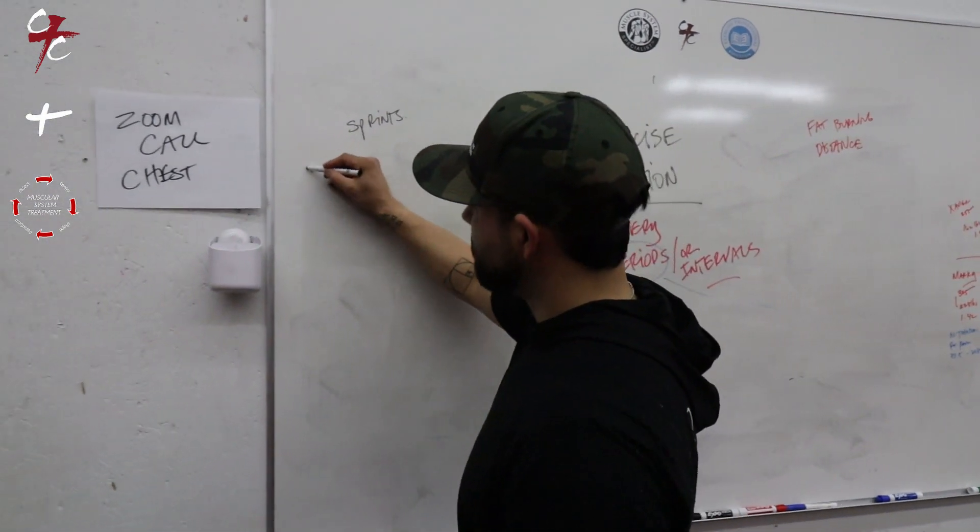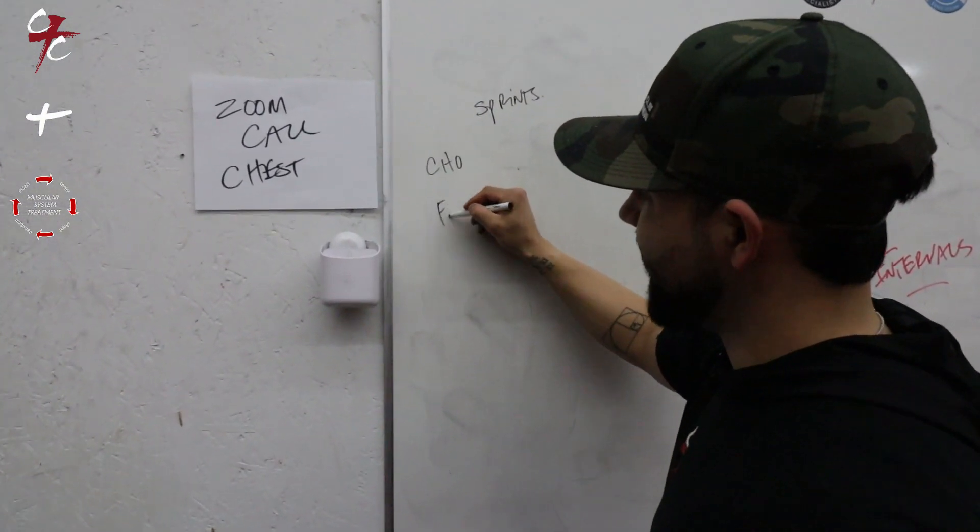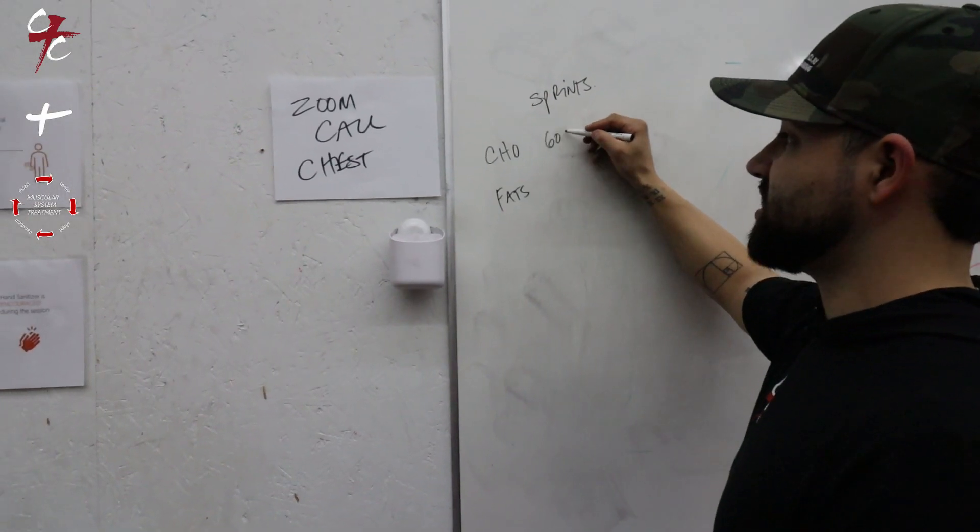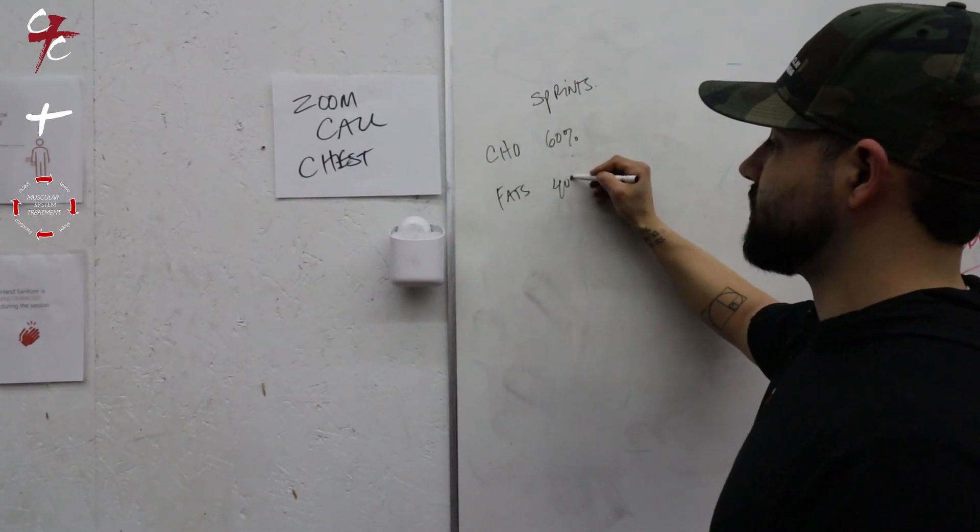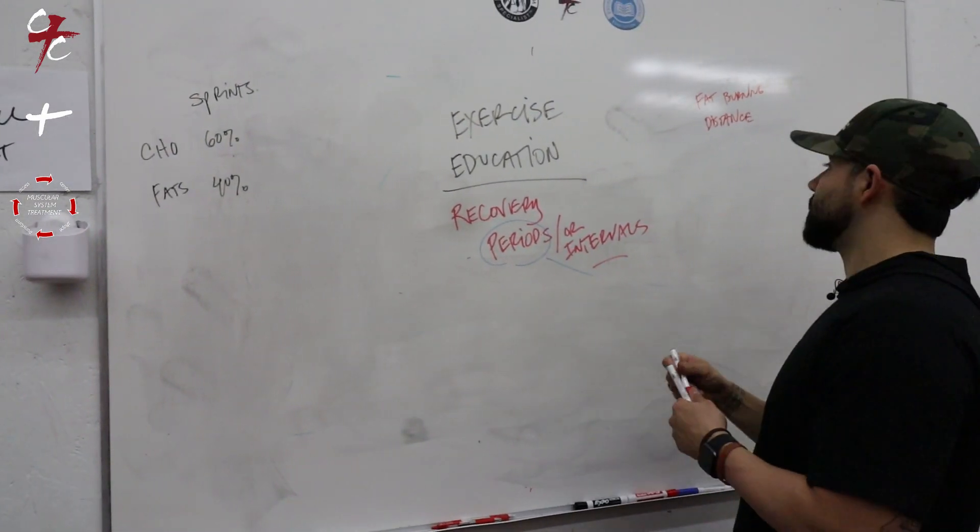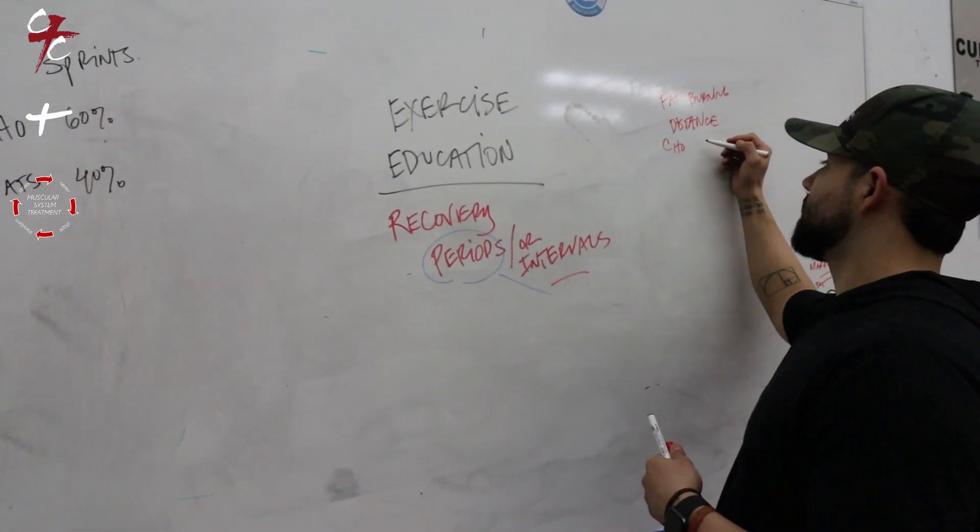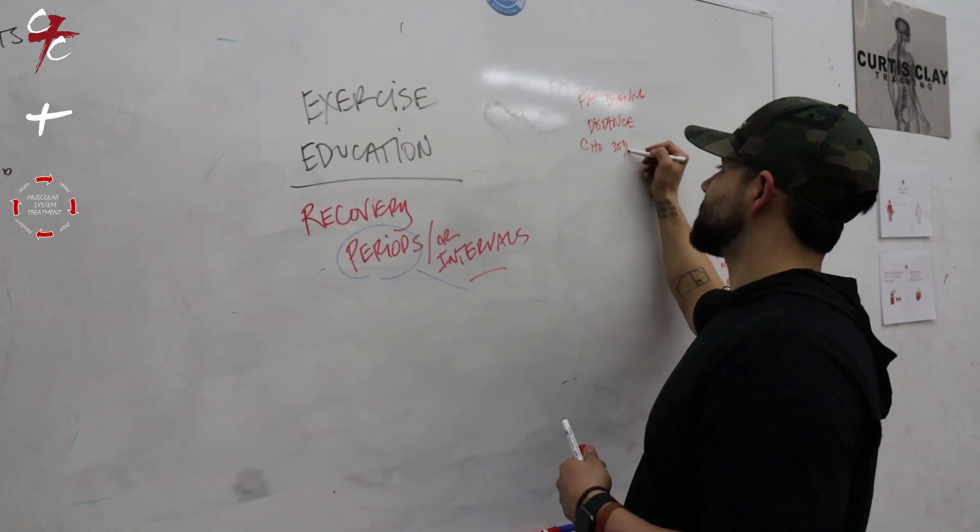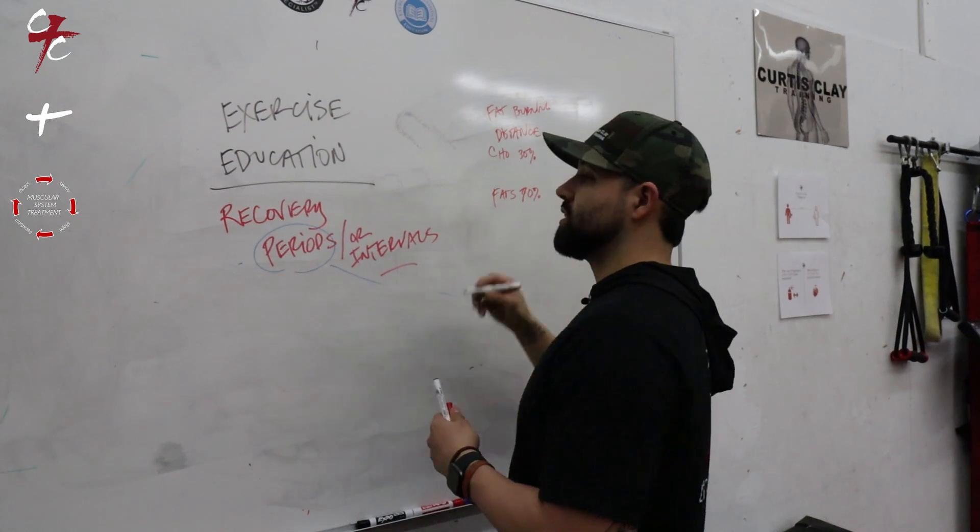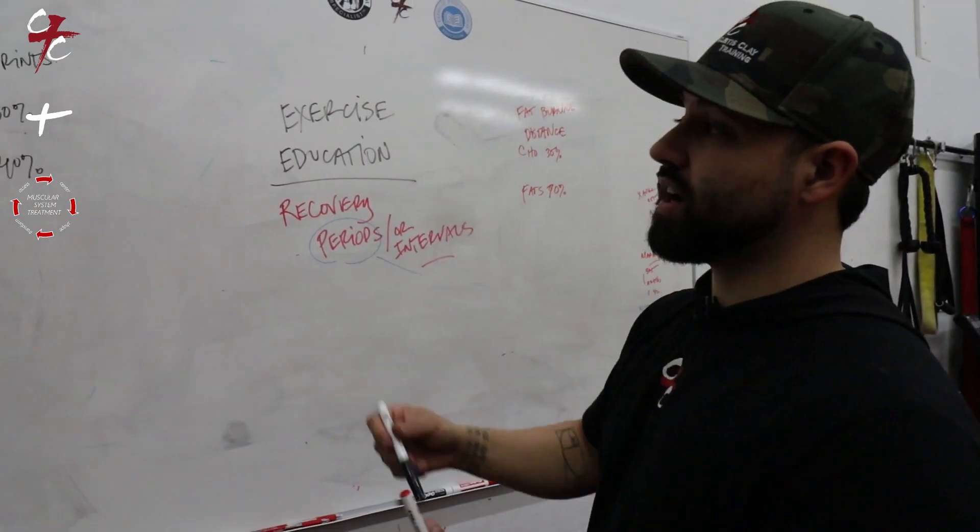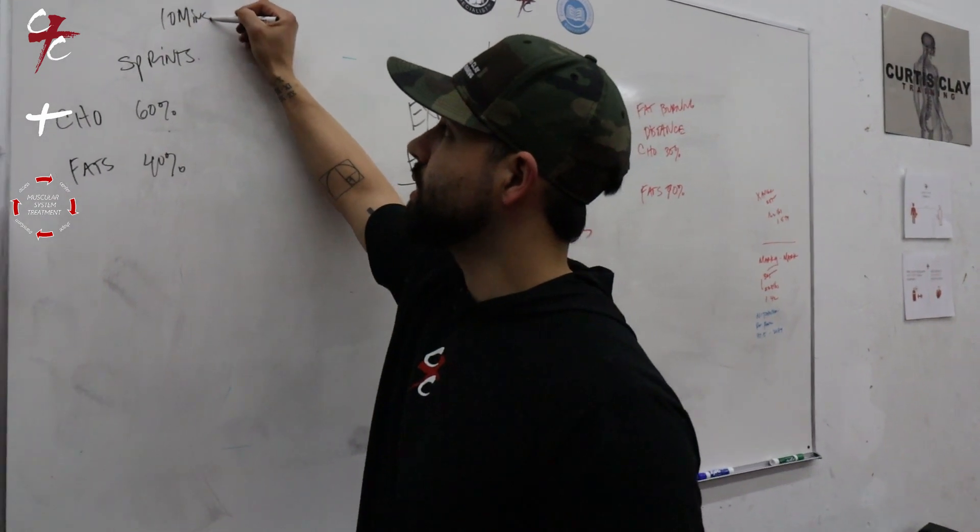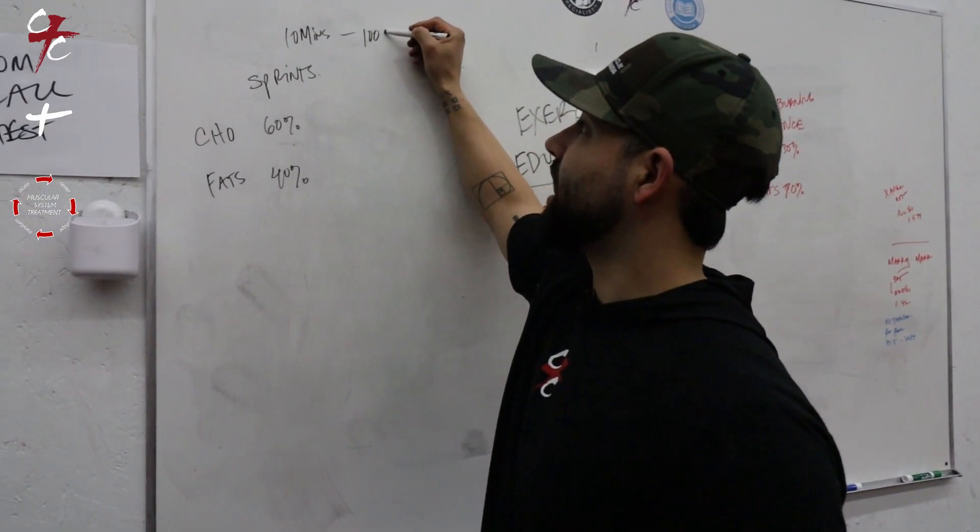Say for example, with sprints you're going to burn let's say sixty percent carbs and forty percent fats. With distance running, the research showed with carbs it's burning like thirty percent, and fats was like seventy percent.